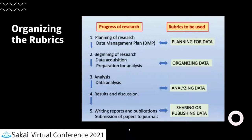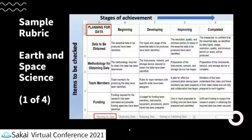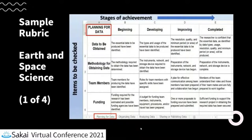This is a sample rubric from the earth and space science researchers. They placed their skills into four different rubrics with four levels of mastery and many rows of similarly grouped skills.